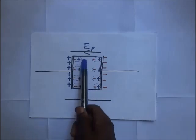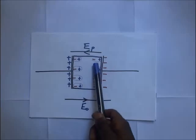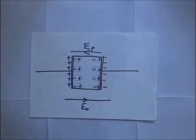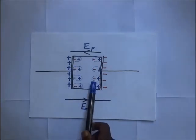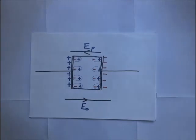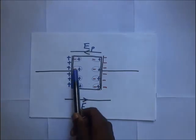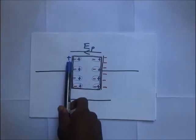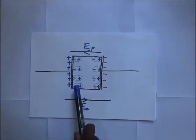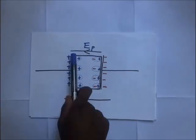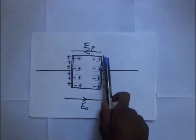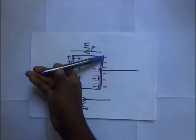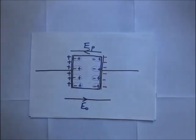Initially, the dielectric has randomly oriented molecules inside it. But when we introduce the dielectric into the field E₀, these molecules become polarized. Near the surface adjacent to the positive plate, electrons are attracted, producing negative charges. Near the negative plate, positive charges appear on the surface of the dielectric.